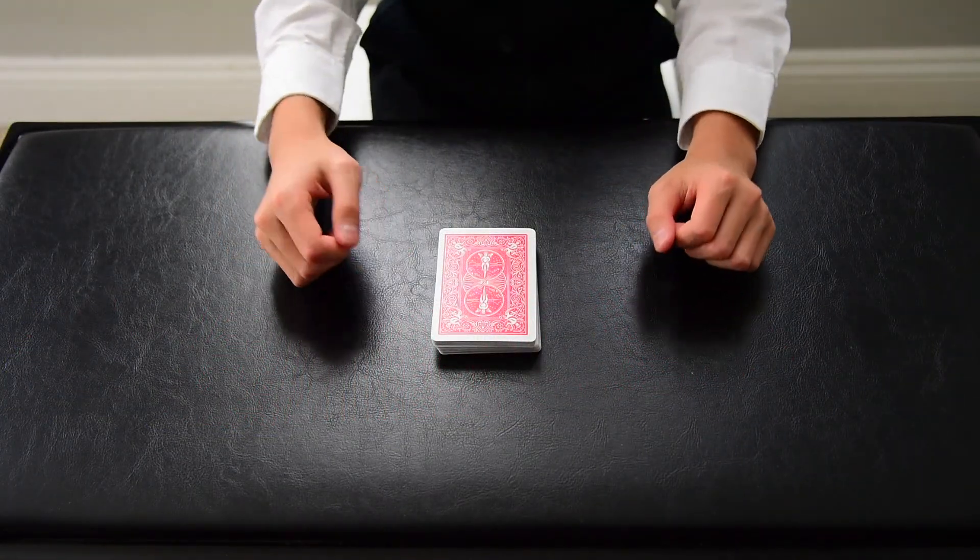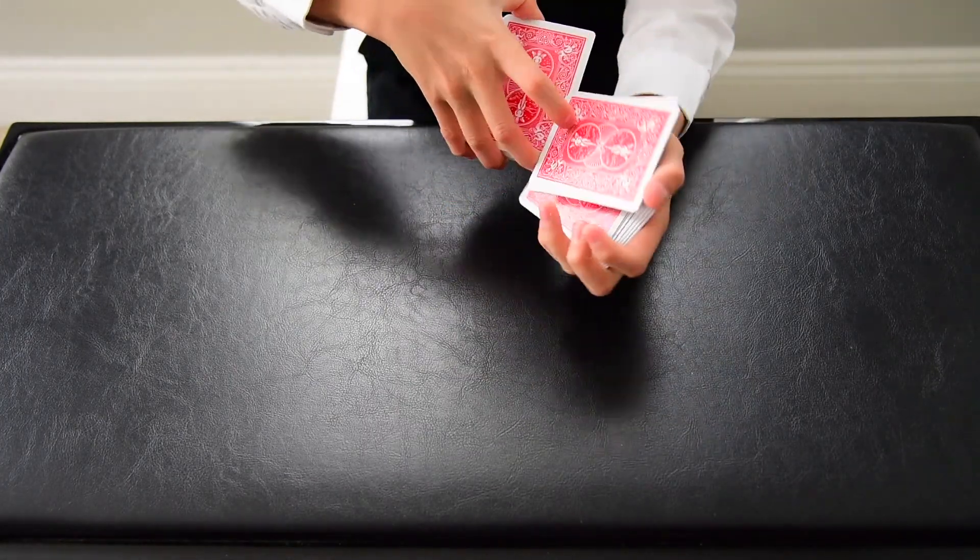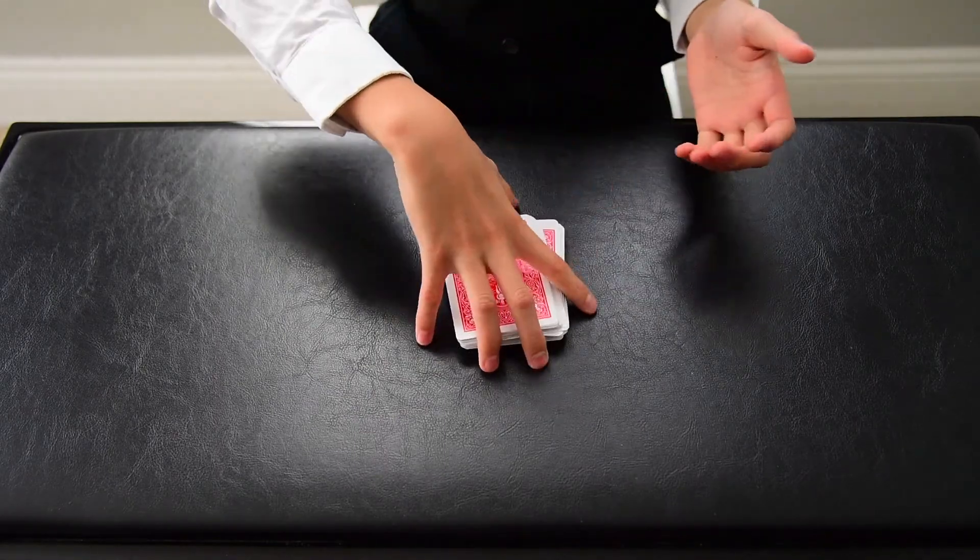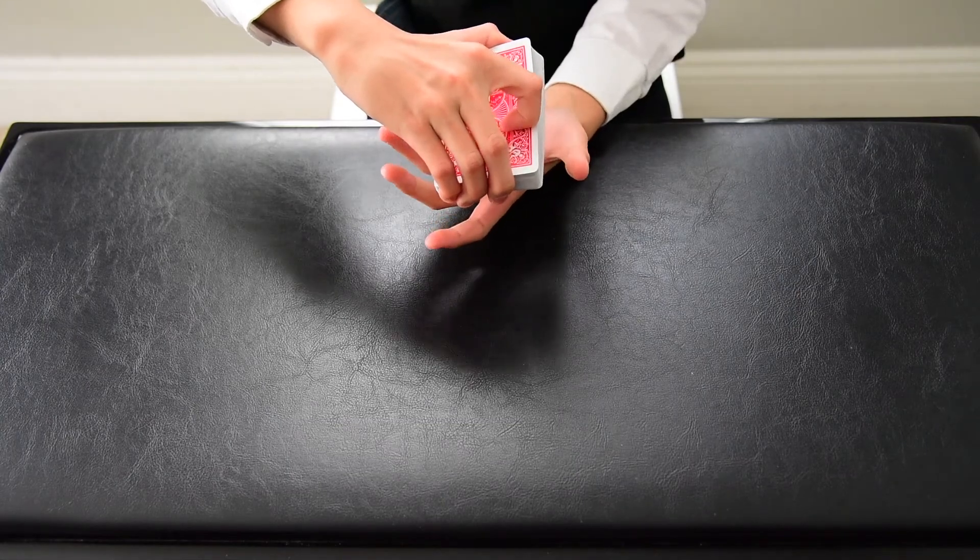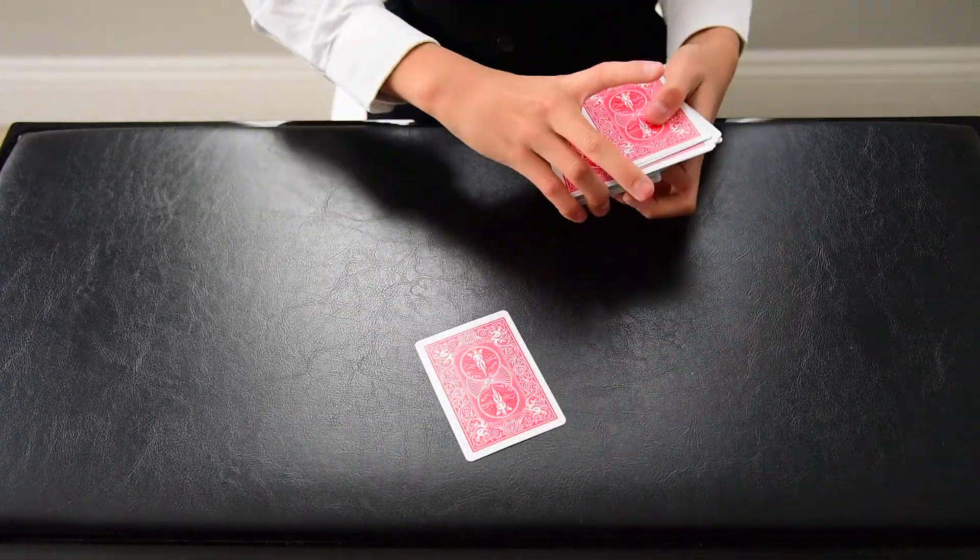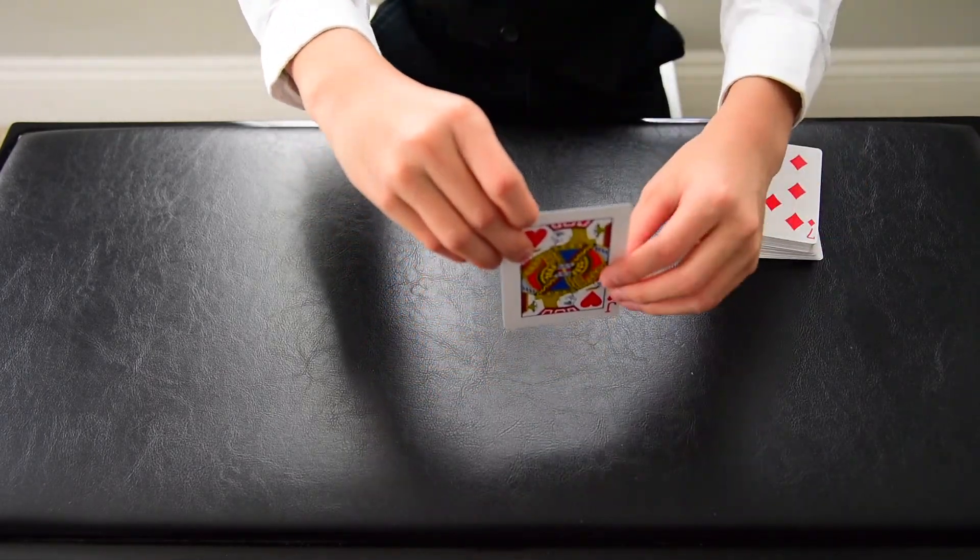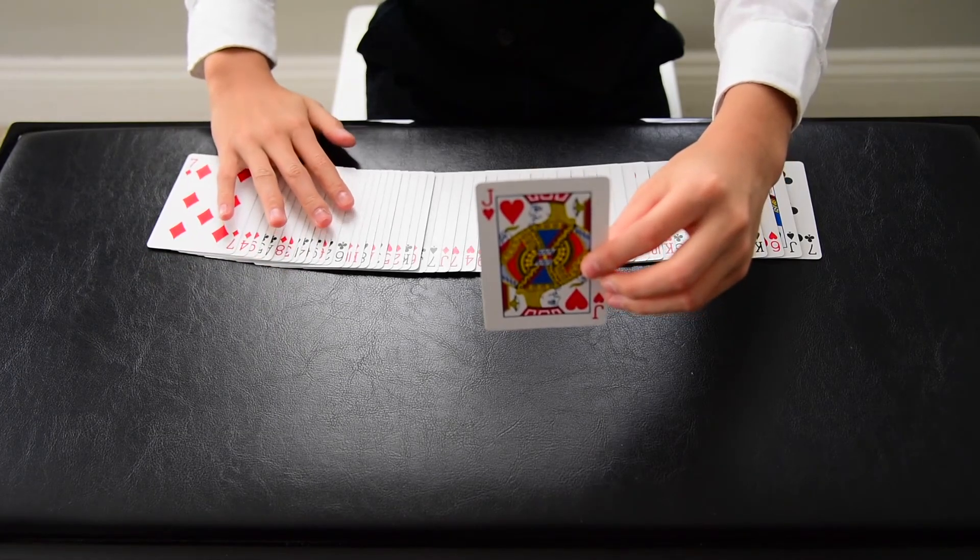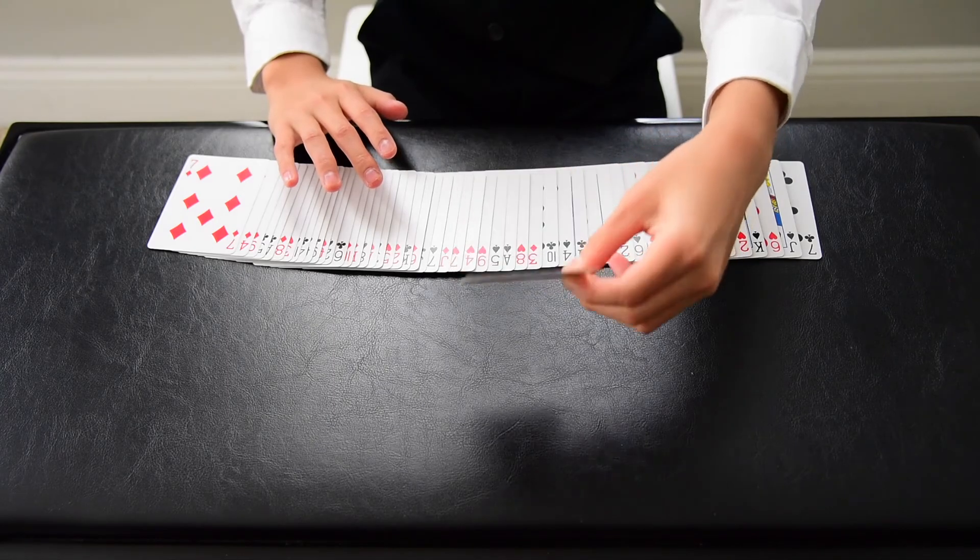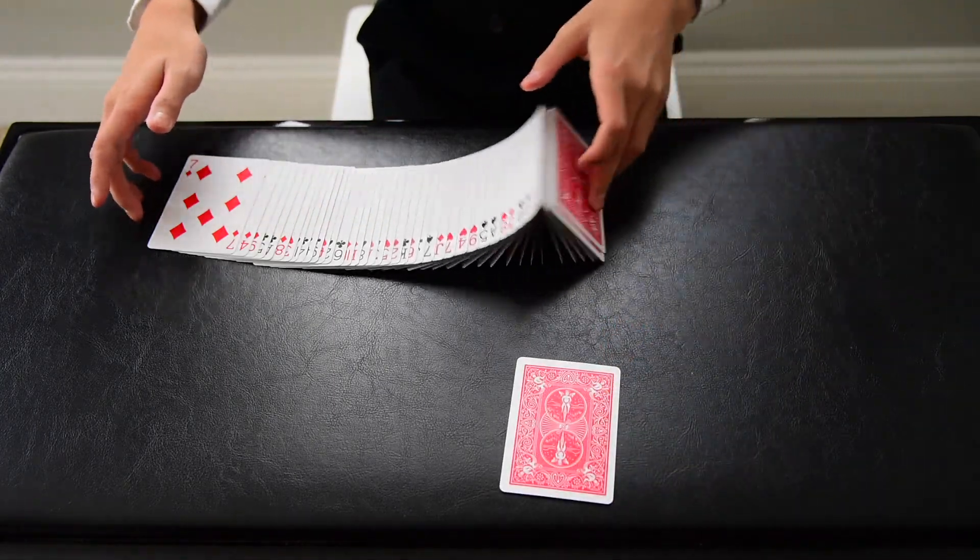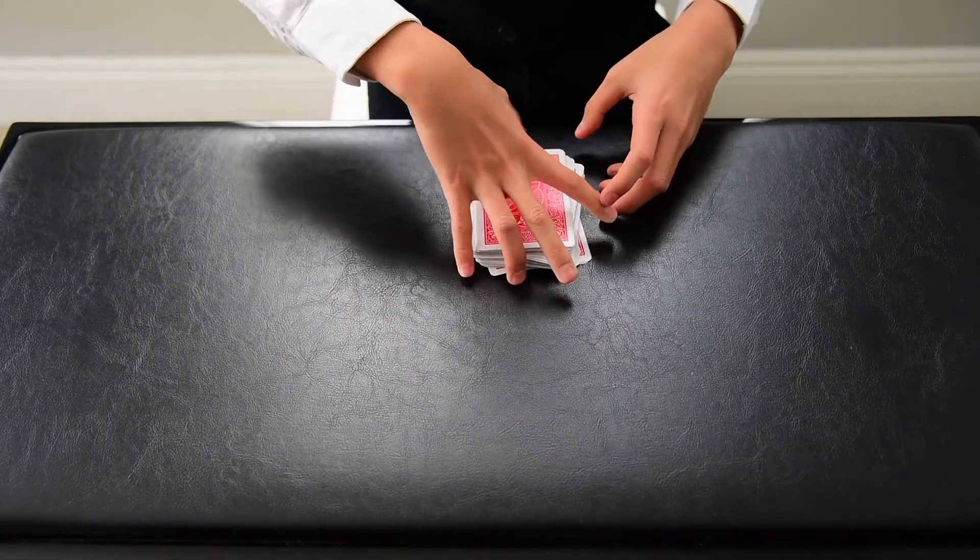For this next trick, we begin by giving the deck some cuts. Once we are done, I ask my spectator to call stop anywhere as I dribble off cards from the deck. Stop. This would be the spectator's selection. Remember, I have no clue what it is and I'm not looking. So we put it in the middle of the deck and give the deck a quick shuffle.